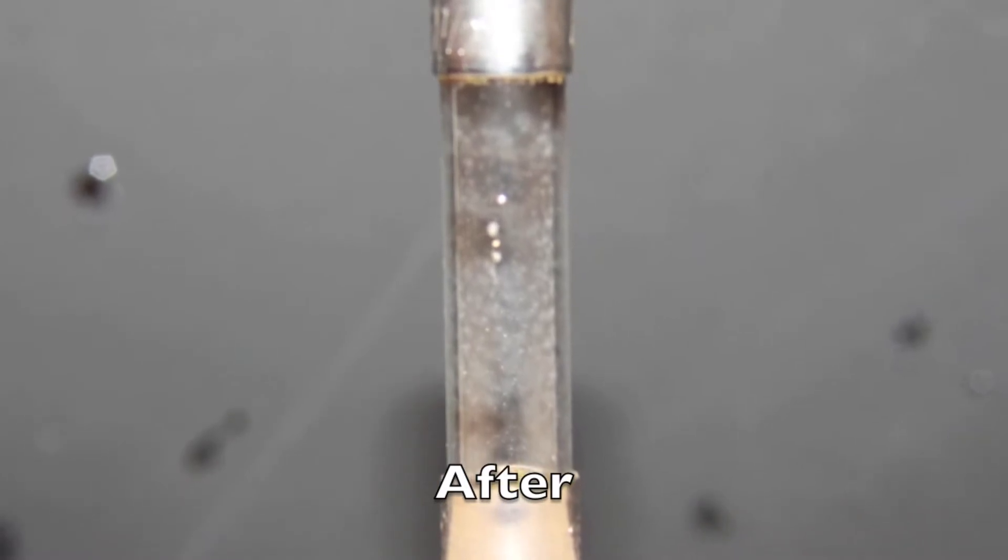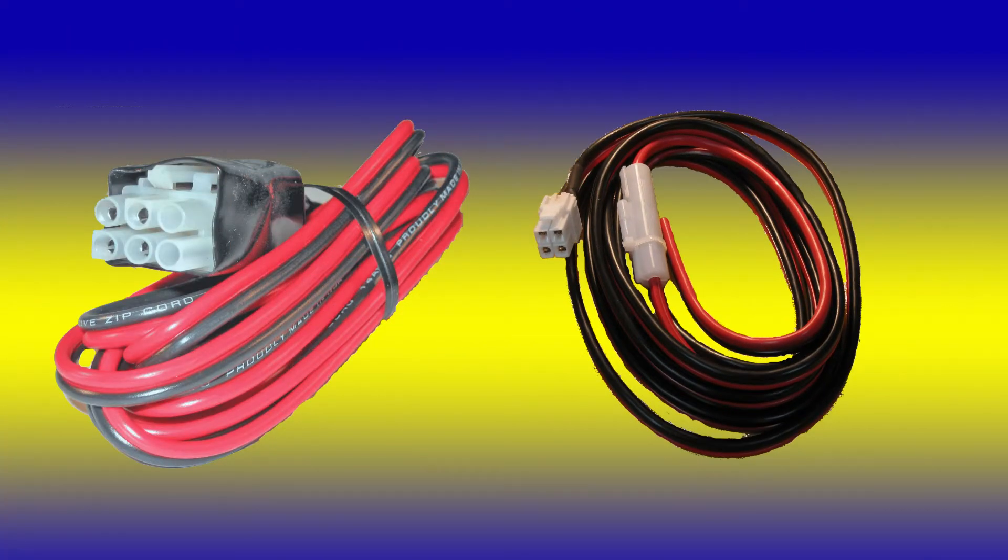Most amateur transceivers DC cords are built using 10 gauge wire. Most are about 9 feet long and most are fused at 30 amps. If we subject them to 22 amps of current, they'll exhibit about a half a volt drop. This means the power cable will be dissipating about 11 watts.